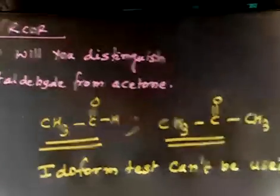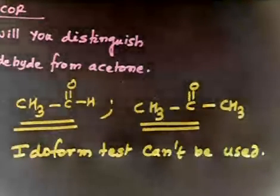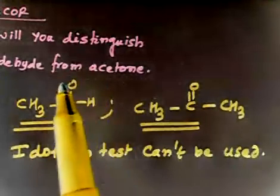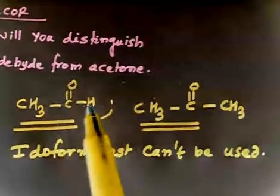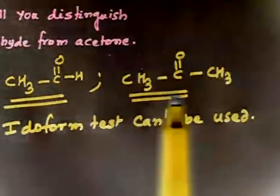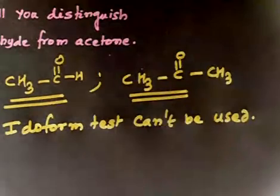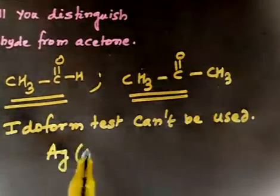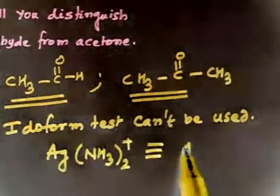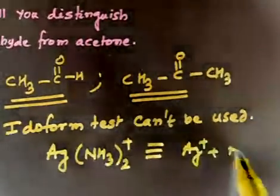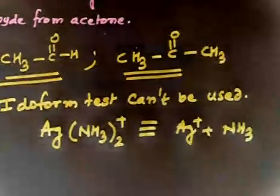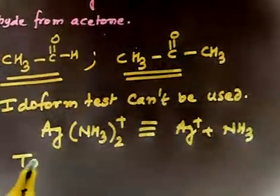So now what is the other option we have? We have the option of Tollens reagent. Tollens test is only given by aldehydes. In the presence of Ag plus, this will get oxidized but this will not. So you have to treat these two compounds with ammoniacal silver solution, that is Tollens reagent: Ag(NH3)2 plus. This is basically equivalent to Ag plus in a solution of NH3.